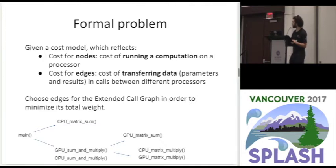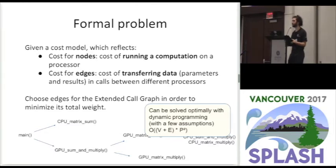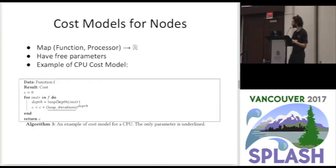We assume cost models for both the nodes and edges of this extended call graph. Node costs indicate the cost of running a function on a given processor; edge costs indicate the cost of transferring data needed between function calls. Our objective is to minimize the total weight of this extended call graph. With a few simplifying assumptions, we can solve this optimally using dynamic programming. The algorithm runs in O((V + E) × P²), where V is the number of functions, E is the number of calls, and P is the number of processors — typically a small constant.